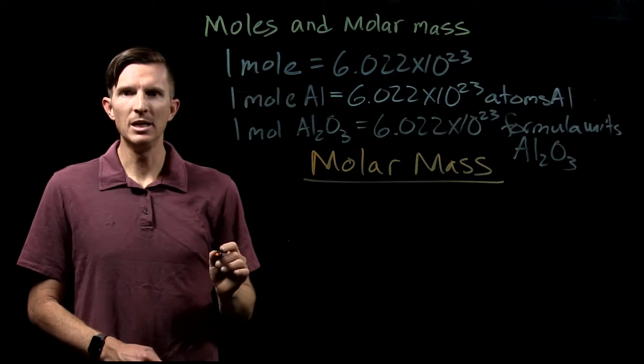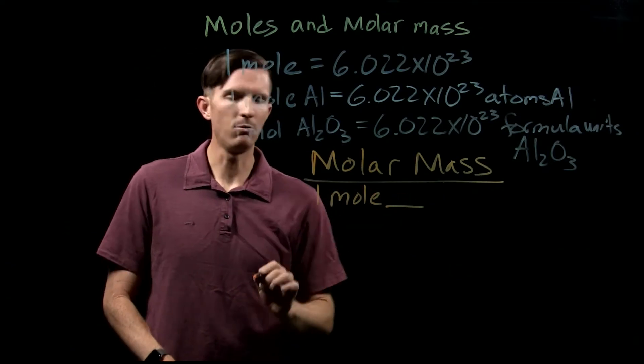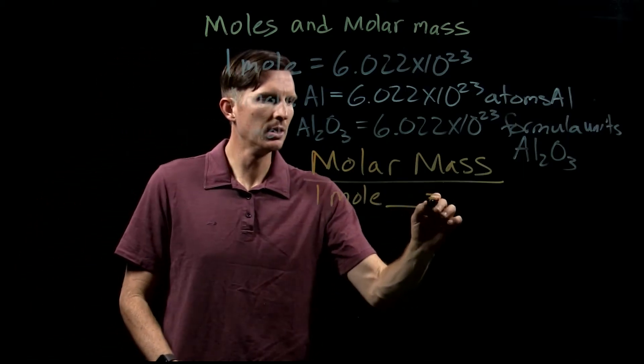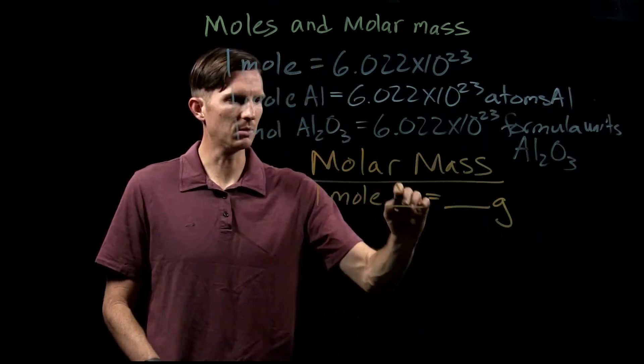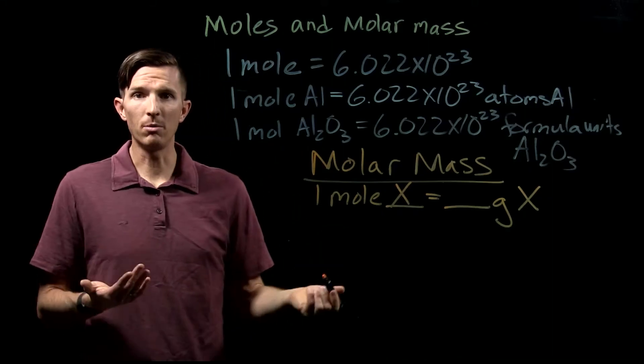Molar mass is basically saying one mole of whatever—aluminum, aluminum oxide, carbon dioxide—equals some number of grams of whatever that would be. I'm just going to call this X, some number of grams of X. That's the molar mass.